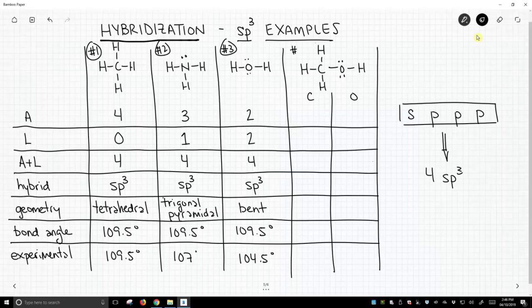Now, molecule number four, methanol, has two second row elements, so we'll start with carbon. This carbon has four attached atoms, three hydrogens and an oxygen, no lone pairs. A plus L equals four. It's sp3 hybridized. It has a tetrahedral geometry, and I'll abbreviate that. A predicted bond angle of 109.5, and the bond angles experimentally indeed are really close to 109.